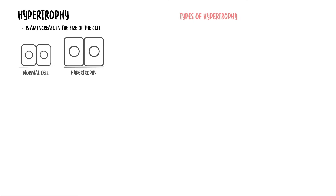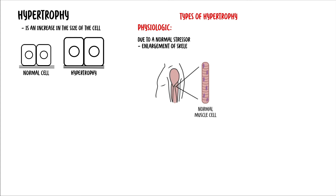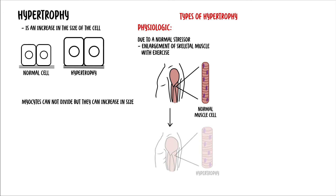The second cellular adaptation is hypertrophy, which is an increase in the size of the cell. Physiologic hypertrophy occurs due to a normal stressor. For example, enlargement of skeletal muscle with exercise. The myocytes cannot divide, but they can increase in size.